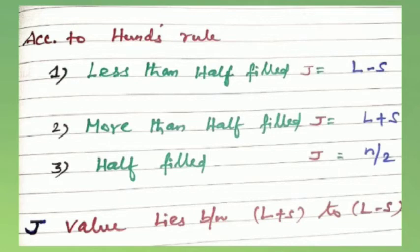Third, if the sub-shell is exactly half-filled, J equals N divided by 2. The J value lies between L+S and L−S, specifically: L+S, L+S−1, down to L−S.